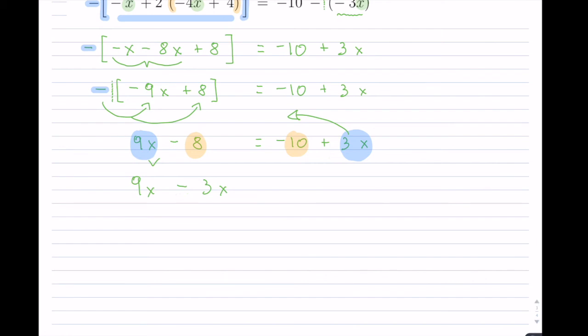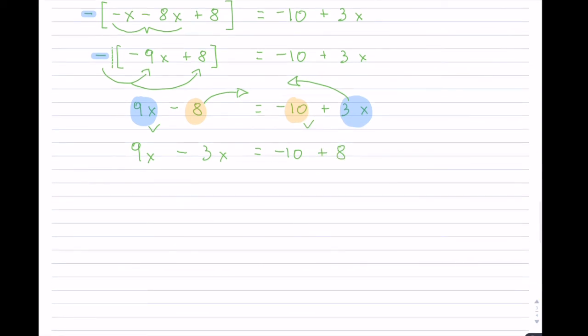And now, working with the numbers, I will bring the negative 8 over. So the negative 10 stays on this side. When you bring the negative 8, it will change to a positive. So that shifts over. And now I can collect my like terms. So 9x minus 3x is equal to 6x equals 2. And then I have negative 10 plus the 8, which is going to be negative 2.